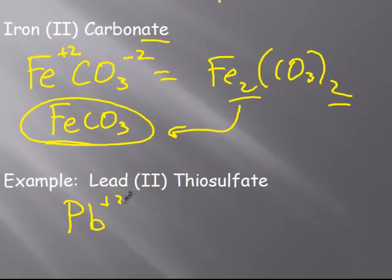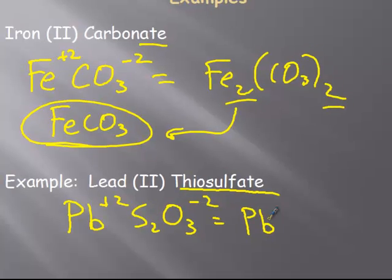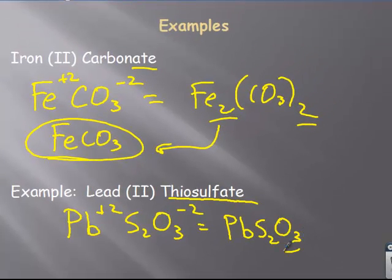Lead, Pb plus two. Thiosulfate. Again, ate tells us, we look at our polyatomic ion list. Thiosulfate is S2O3 minus two. So, we have plus two minus two again. So, Pb, S2O3 for lead two thiosulfate.